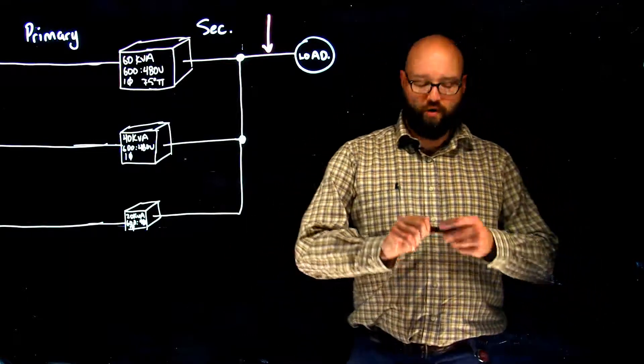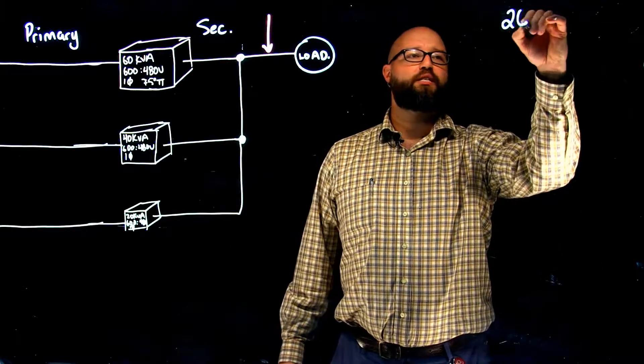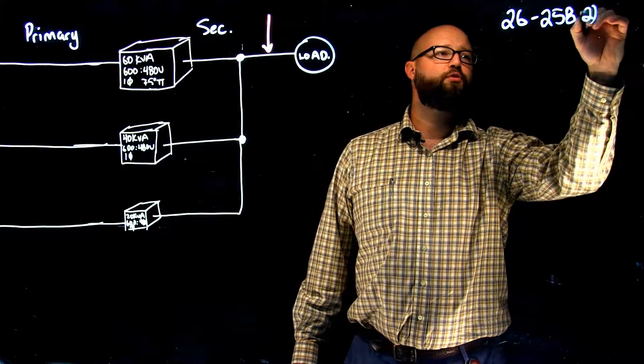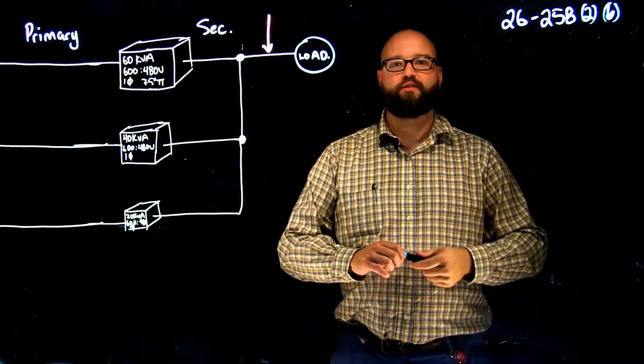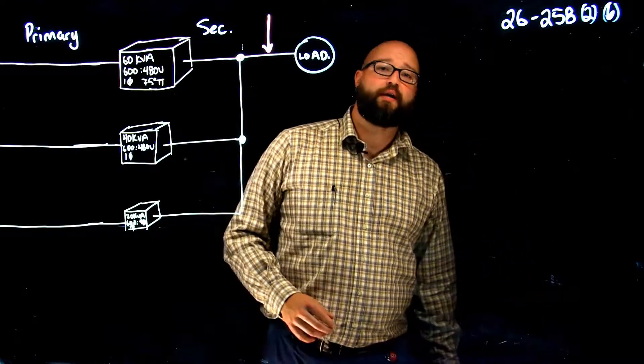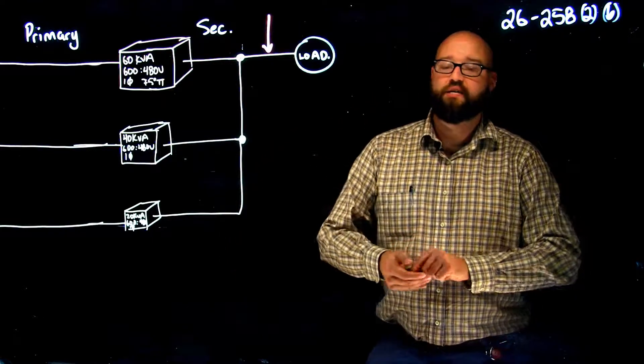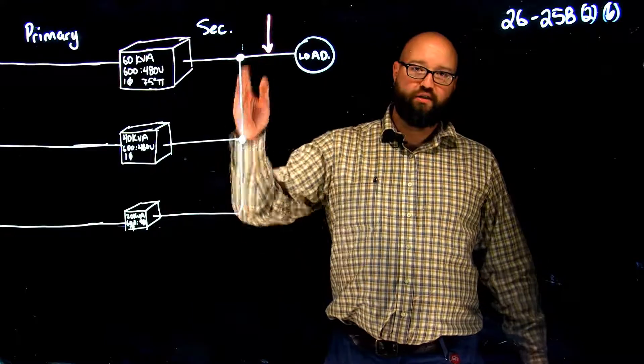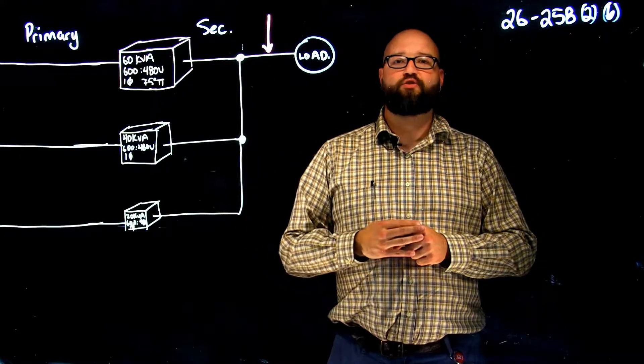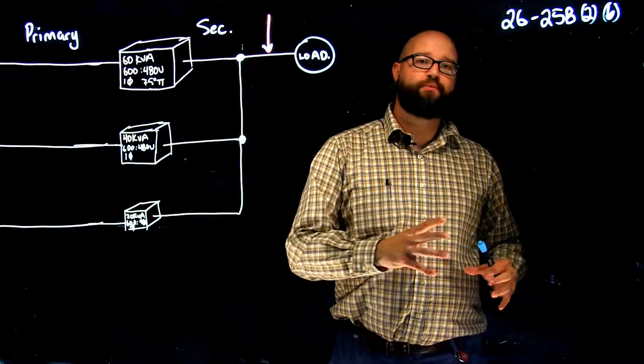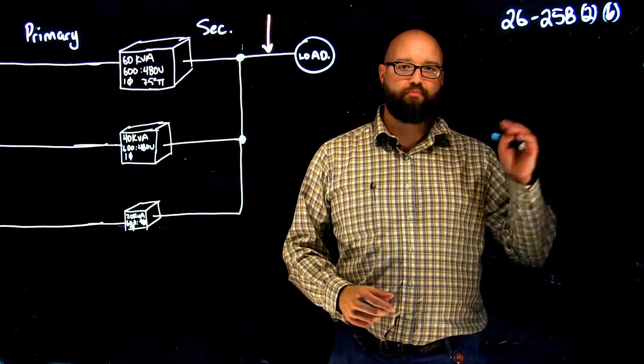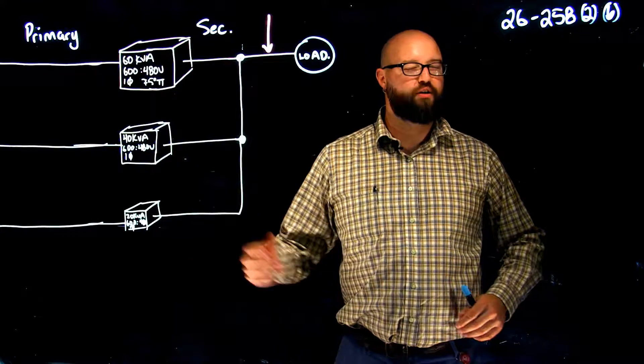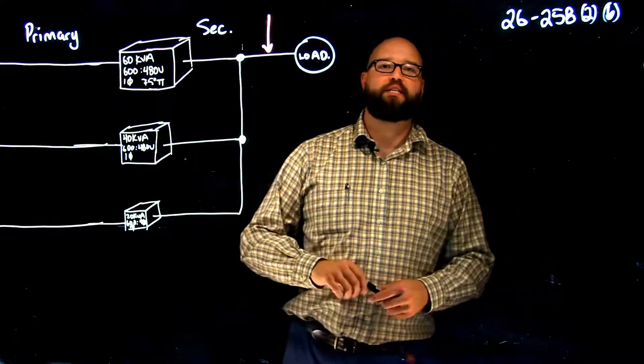So we are going to reference in this one 26258 sub rule 2 item B now for parallel secondary conductors of multiple transformers. The way the rule states is we are basically going to take the rated current of each one of these transformers, we are going to add them together, and then we are going to take 25% of that number and put it right on top. Again we're going to do a little bit differently but it'll give us the exact same result.